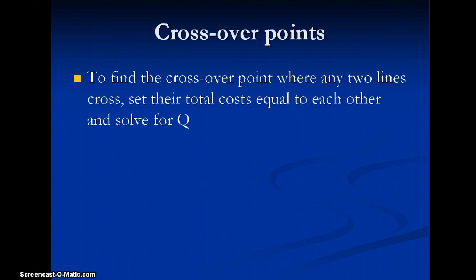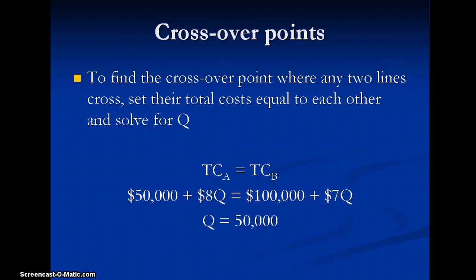So what we're going to do is set the two lines that cross equal to each other and solve for Q. So for the first one, we'll set total cost of A equal to total cost of B. The total cost of A is represented by 50,000 plus 8Q. And the total cost of B is represented by 100,000 plus 7Q. Let's move all of the Qs to the left and all of the dollar amounts to the right. And we would see that our quantity equals 50,000.